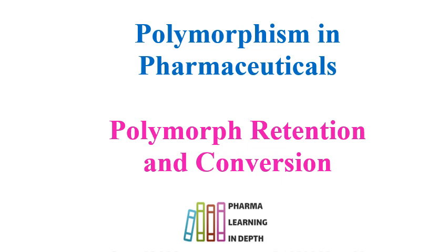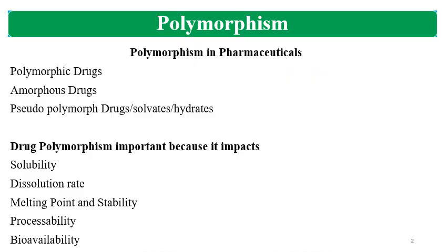Please watch the video till the end so that you can get a good idea about the topic. Drugs may be present as polymorphs or in multiple crystalline forms, or in the amorphous form. Drugs may also be present in pseudo-polymorphic forms, solvate form, hydrate form, or anhydrous forms — so drugs are present in different polymorphic forms.